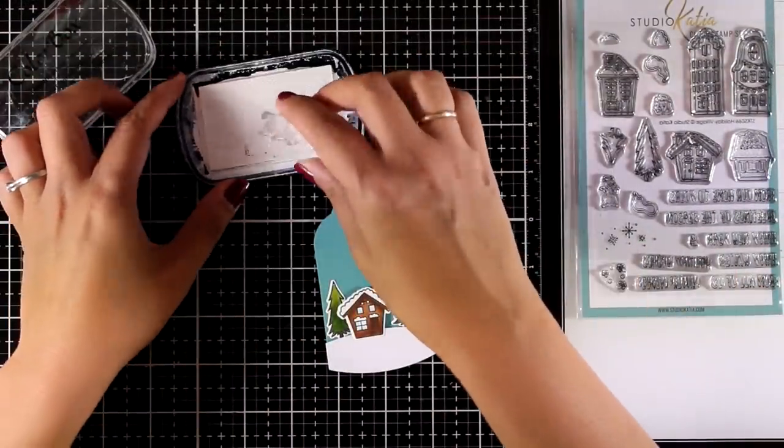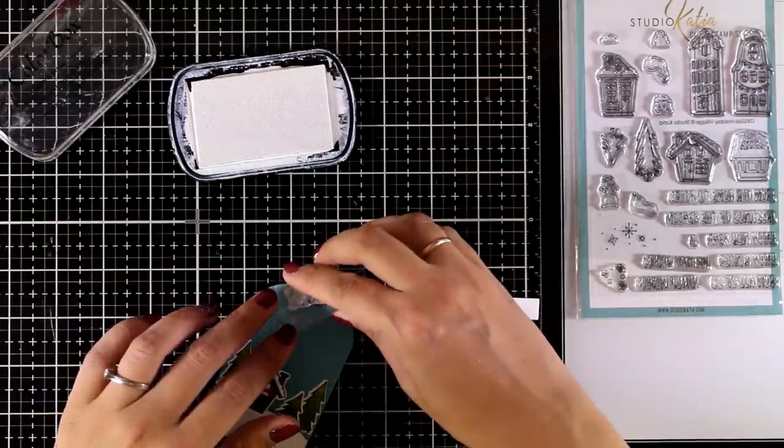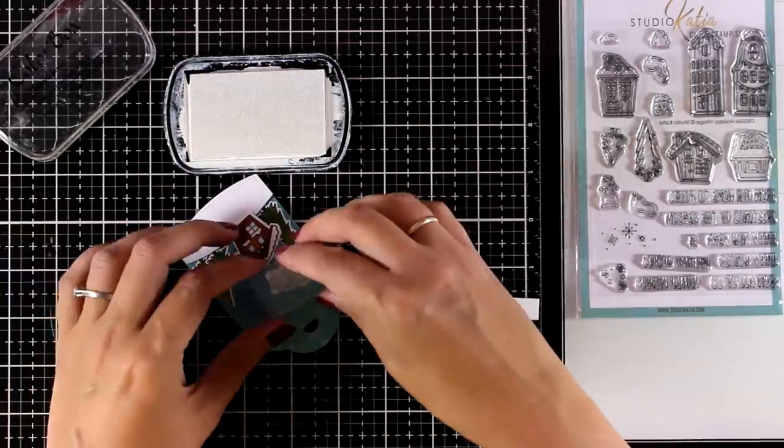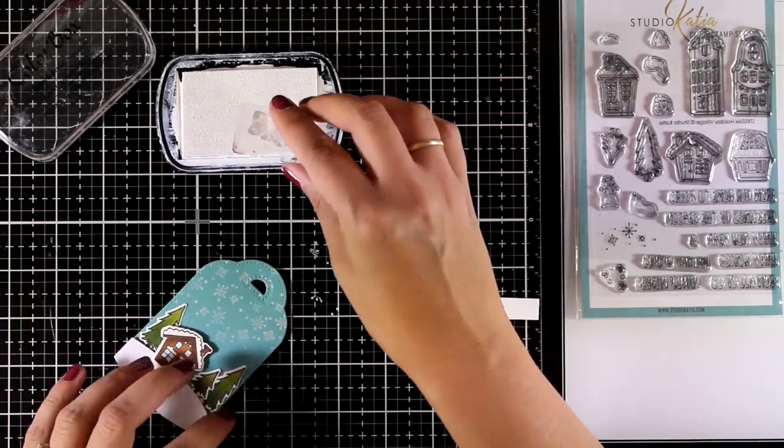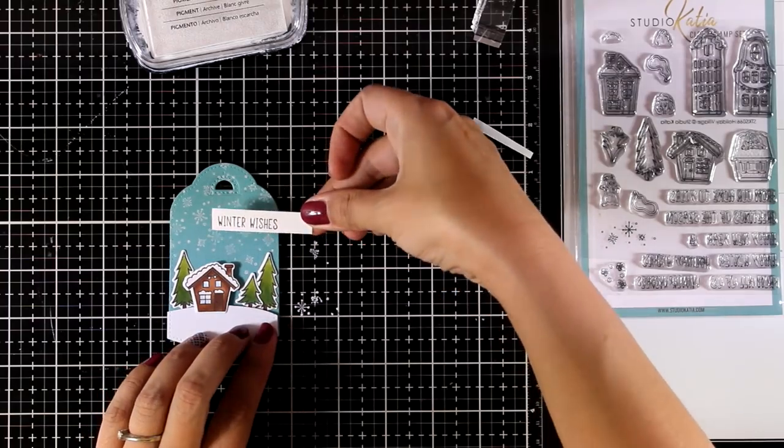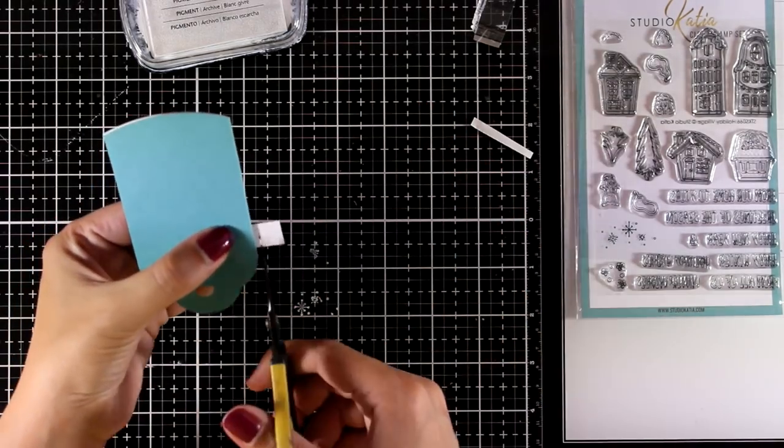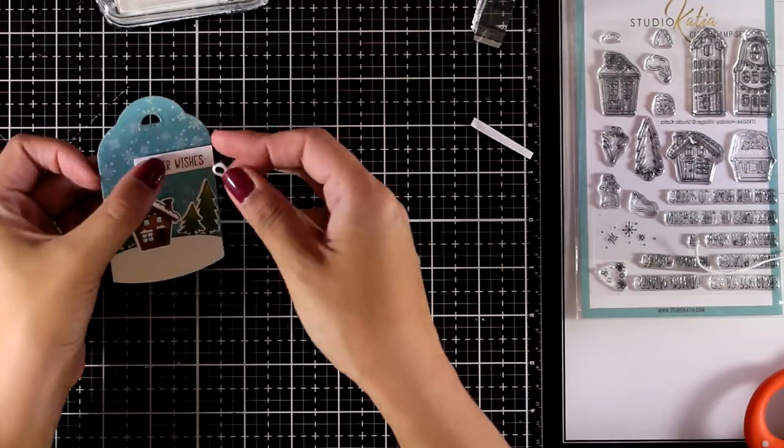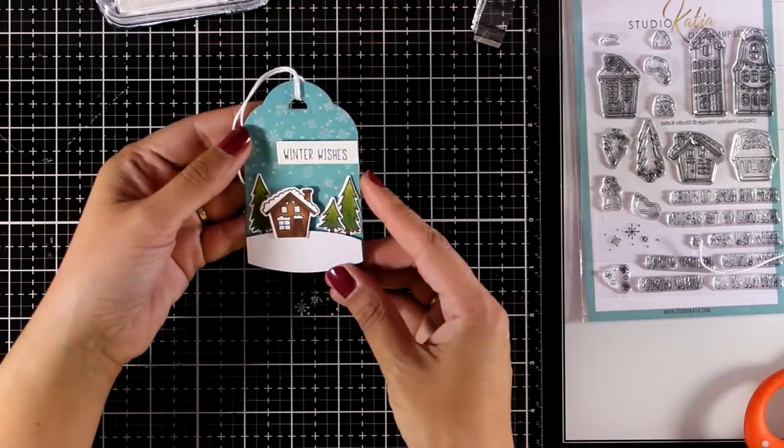Now I want to have some snow at the background and I'm using one of the stamps from this stamp set that has a bunch of little snowflakes. I'm using white ink to do so. Of course you can white emboss them if you want to have them more vibrant, and then I can go ahead and stick my sentiment that I have already stamped and it says winter wishes. And on all the tags that I am creating today you have an empty space where you can write there your from and to before you hand it out with your gift.